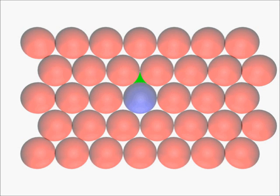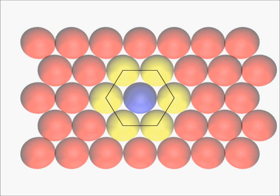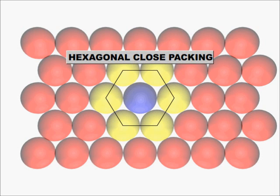The voids created in this packing touch three spheres forming an equilateral triangle and are called triangular voids. A single sphere touches six other spheres and by joining the centers of these spheres we get a hexagon. Therefore this packing is called hexagonal close pack.